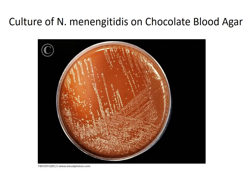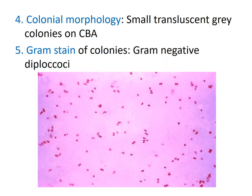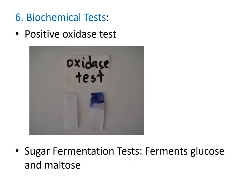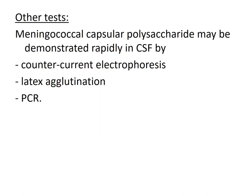The culture plate of Neisseria meningitidis on chocolate blood agar can be examined after incubation; from the culture plate, prepare a gram stain to see the gram-negative diplococci. Biochemical tests include the oxidase test — it is rapidly oxidase positive — and sugar fermentation tests showing fermentation of both glucose and maltose. Rapid diagnostic tests are mostly based on identification of meningococcal capsular polysaccharide and include counter-current electrophoresis, latex agglutination, and molecular tests utilizing polymerase chain reaction techniques.